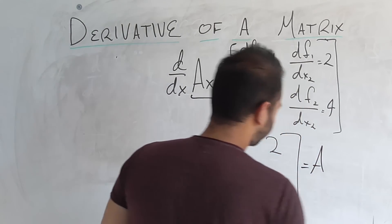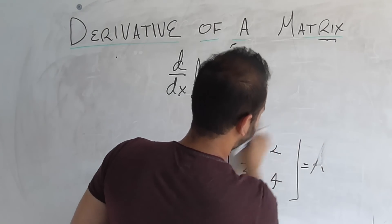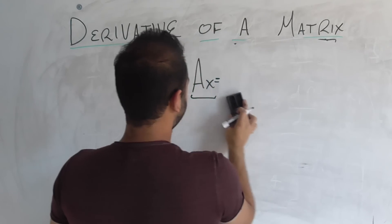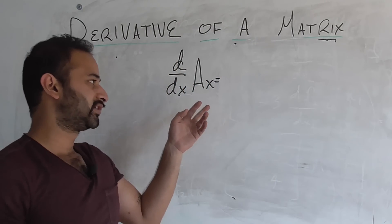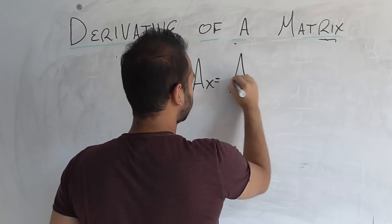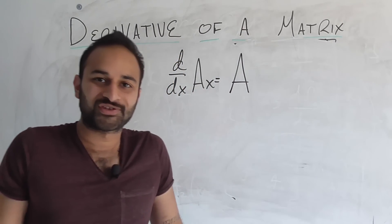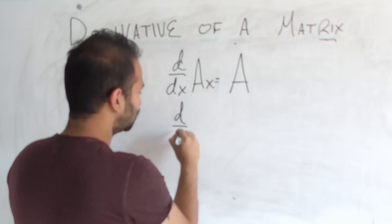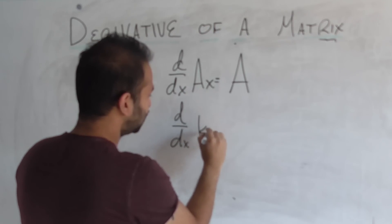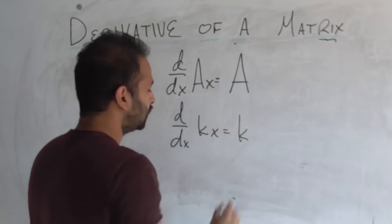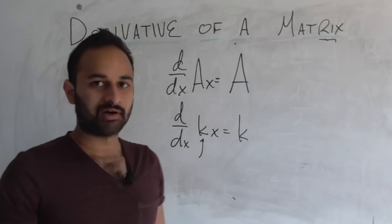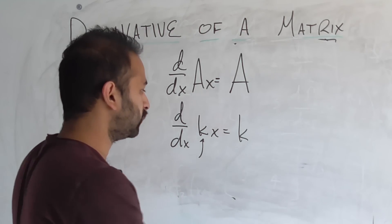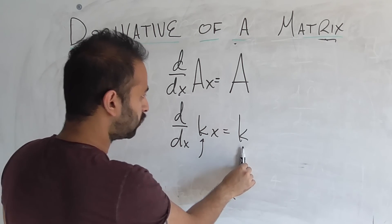So that means that after all of this work, we have found that d/dx of this linear transformation, A times x, is equal to A. And the reason I think this is so awesome is because it has a very clear analog to this problem we did in the beginning, where we did d/dx kx is equal to k. This k back then was a scalar, like a number like 1 or 2. And we found that its derivative was just that number itself.